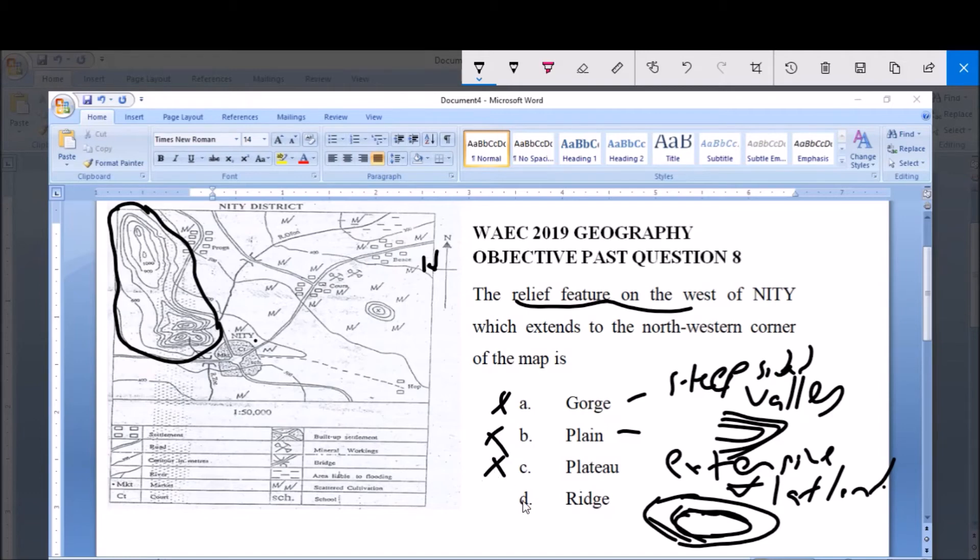this description. Hence it is not a plateau. However, option d, ridge, is basically described as a long and narrow hill, a long narrow hill with a series of elongated contour lines, elongated contour lines, and the length